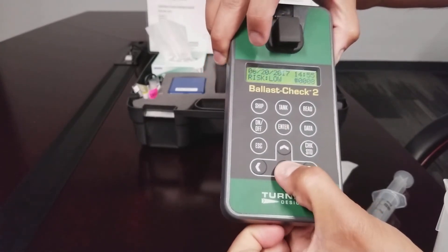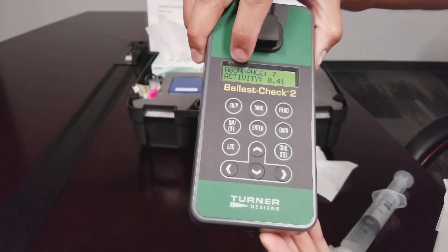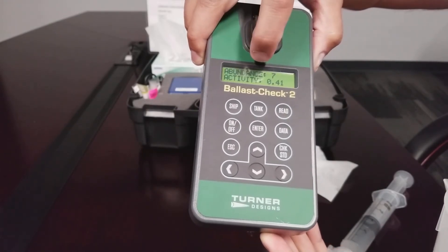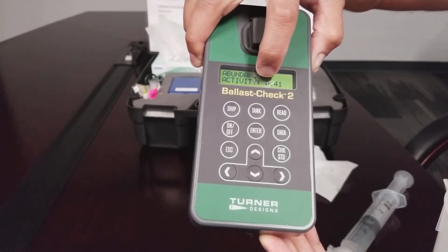Press the down arrow key to view the factors used when calculating risk. Abundance is a quantity of cells per mil. Activity indicates the health or viability of the cells in this sample.